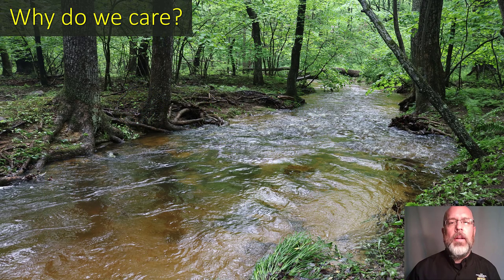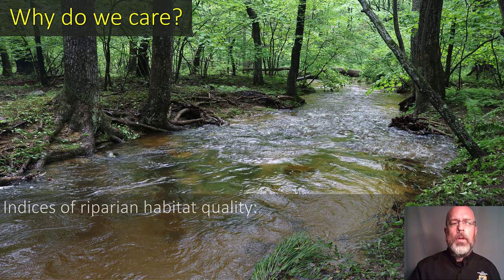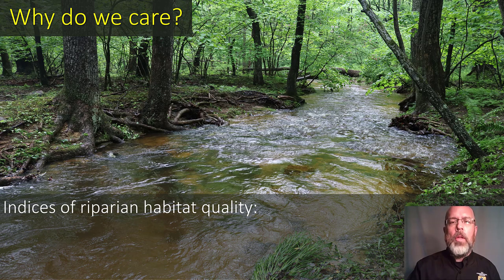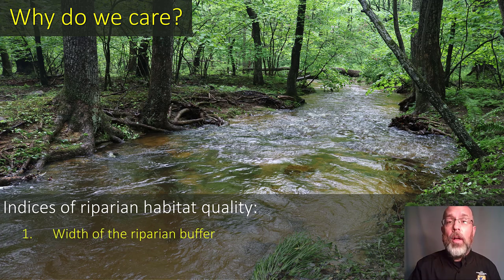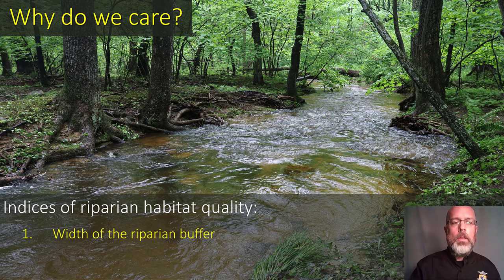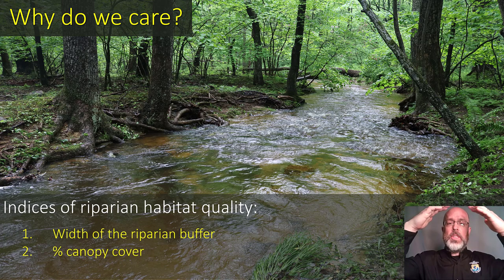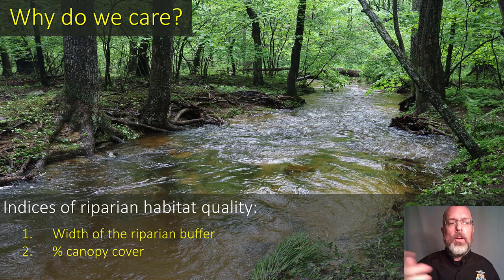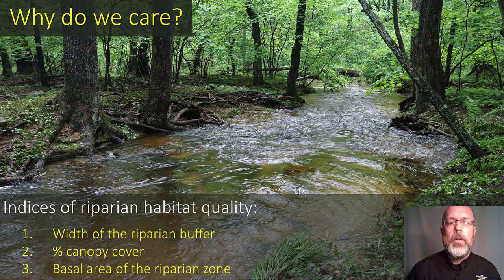So why do we care about basal area, and why do we care about it in the riparian zone? When we look at standard indices of riparian habitat quality, some of the things included are the width of the riparian buffer — how big and wide is that buffer — the percent canopy cover, how much closure we see above the stream, and also the basal area of the riparian zone. It's included oftentimes in these indices of the quality of riparian habitat.